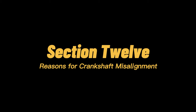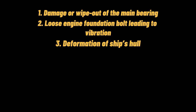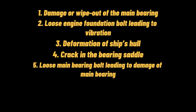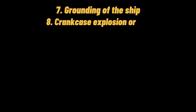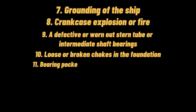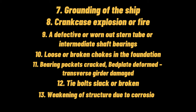Reasons for crankshaft misalignment include: damage or wipeout of the main bearing; loose engine foundation bolt leading to vibration; deformation of the ship's hull; crack in the bearing saddle; loose main bearing bolt leading to damage to the main bearing; high bending moment applied to the crankshaft due to excessive force from the piston assembly; grounding of the ship; crankcase explosion or fire; a defective or worn-out stern tube or intermediate shaft bearings; loose or broken chokes in the foundation; bearing pockets cracked; bed plate deformed or transverse girder damaged; tie bolts that are slack or broken; and weakening of structure due to corrosion.